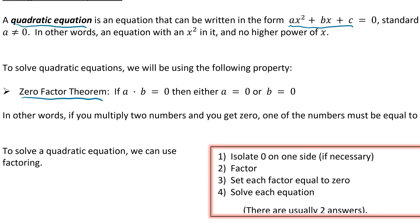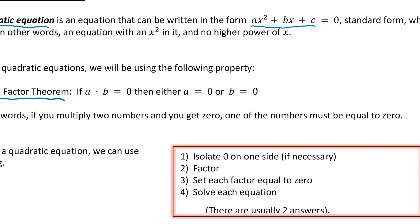You can't multiply any other numbers to get 0 other than one of them being 0. So in order to use that property, the first thing we need to do is isolate 0 on one side — just set the equation equal to 0. Second, factor it using the same methods we've already learned. Third, set each factor equal to 0 using the zero factor theorem. And lastly, solve the two smaller equations. Usually there are two answers, though sometimes there is just one answer that repeats.